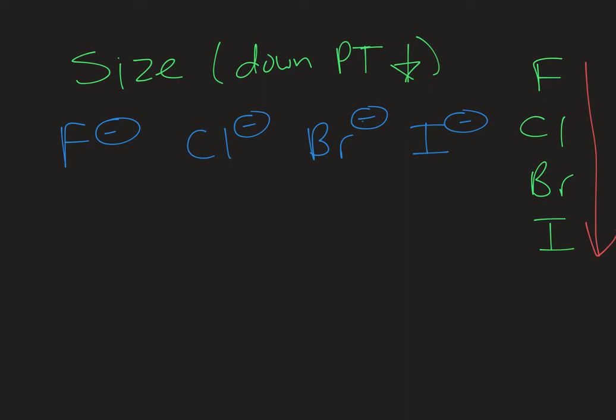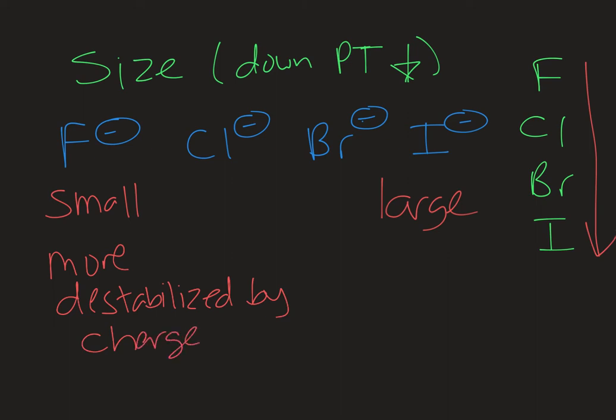Going down the periodic table, this fluoride ion here is going to be small relative to the iodide ion here which is going to be much larger. The larger the atom is the more space there is to distribute that charge out over. So the smaller atom in that series is going to be more destabilized by the charge because that charge is in a smaller area.